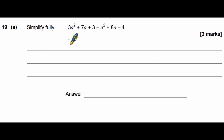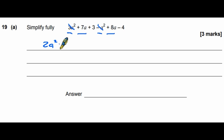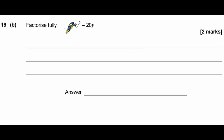Question 19a: simplify fully. We collect like terms, remembering that terms with different powers are not like terms. For a squared: 3a² − a² = 2a². For a: +7a + 8a = +15a. For numbers: +3 − 4 = −1. So the answer is 2a² + 15a − 1.